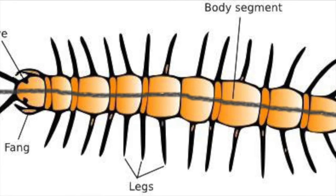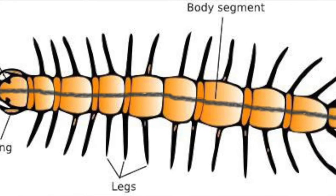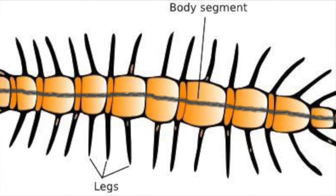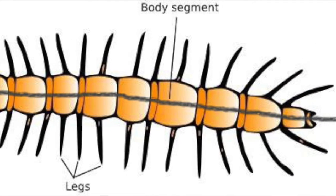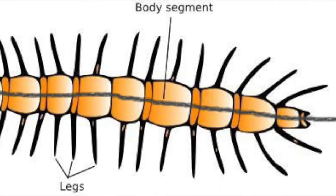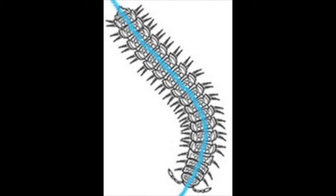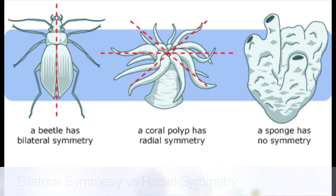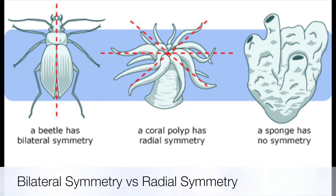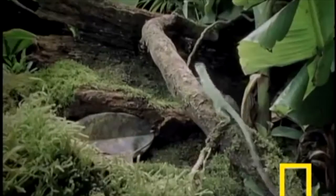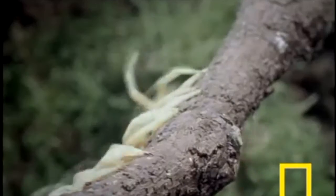This symmetrical arrangement of an organism along a central axis means that the organism can be divided into two mirror-image halves. As seen above, you can see that the animal is divided along the axis of symmetry. Bilateral symmetry is a characteristic of animals that are capable of moving freely throughout their environment, as they are better adapted to efficient movement.